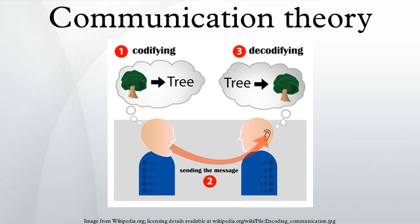Basic elements of communication made the object of study of communication theory include: Source — Shannon calls this the information source, which produces a message or sequence of messages to be communicated to the receiving terminal. Sender — Shannon calls this the transmitter, which operates on the message to produce a signal suitable for transmission over the channel; in Aristotle, this element is the speaker. Channel — for Shannon, the channel is merely the medium used to transmit the signal from transmitter to receiver. Receiver — for Shannon, the receiver performs the inverse operation of the transmitter, reconstructing the message from the signal. Destination — for Shannon, the destination is the person for whom the message is intended.